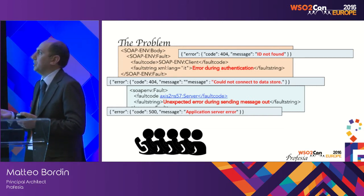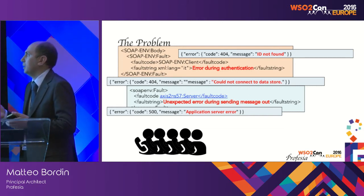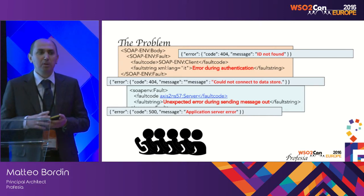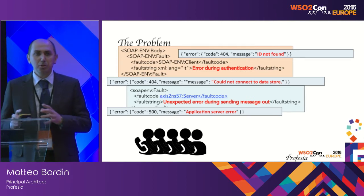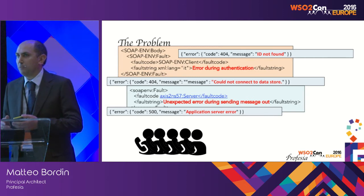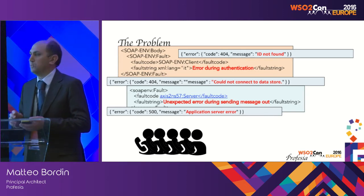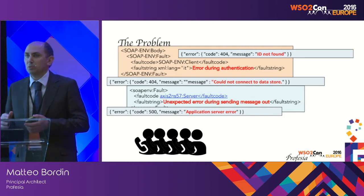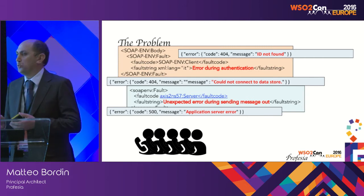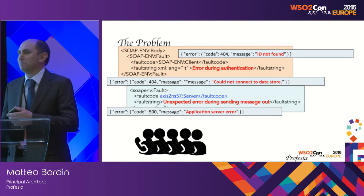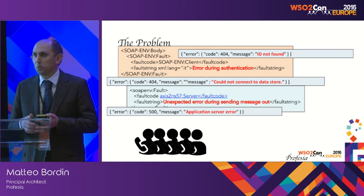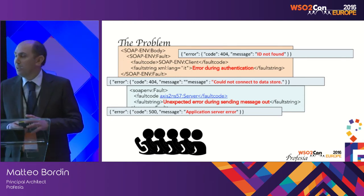Normally the services give us errors like errors during authentication, endpoint not found, or some other general functional or technical error. It's quite difficult to understand where the error is. The other problem is that when we have an error at any position in the SOA architecture, a lot of colleagues call us to say the application is not working.